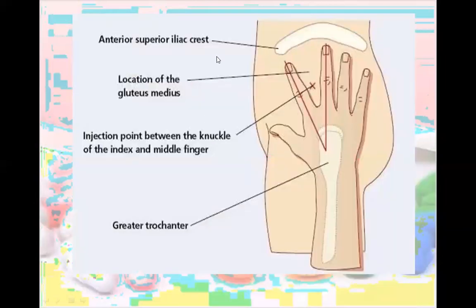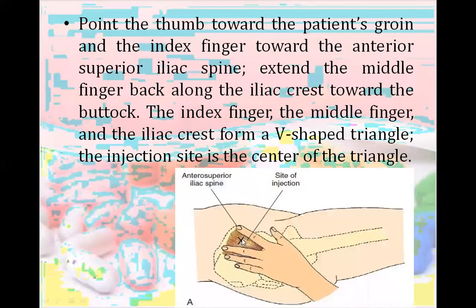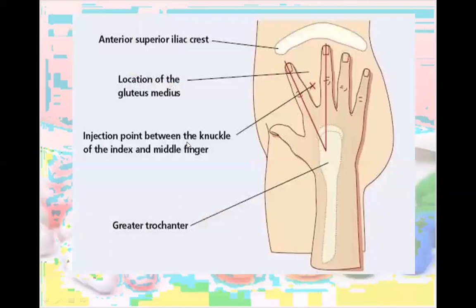In this clearer picture, we place the thumb in the groin region, identify the greater trochanter, and the injection point is between the knuckle of the middle or index finger — that is where we inject. This cross marks the injection location at the gluteus medius, and we measure before injecting.